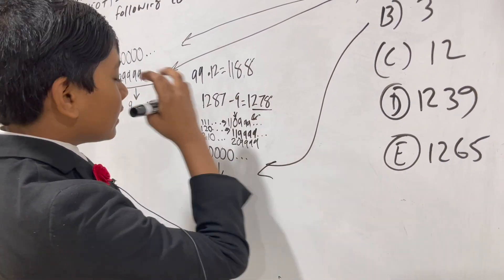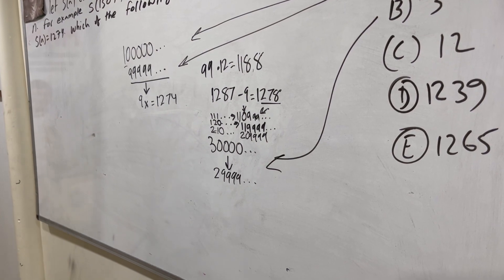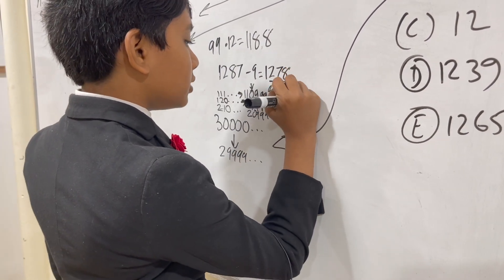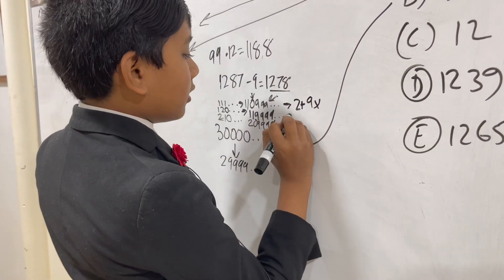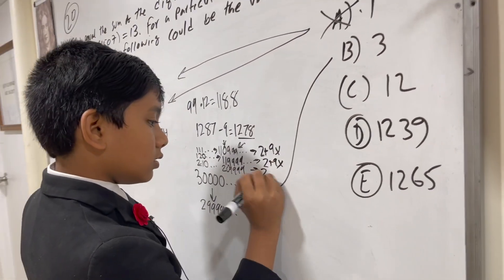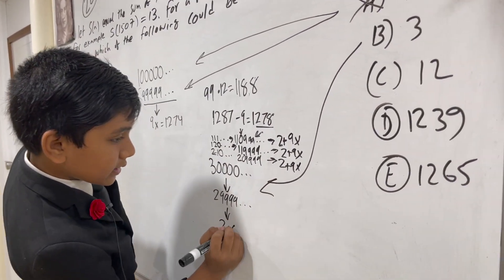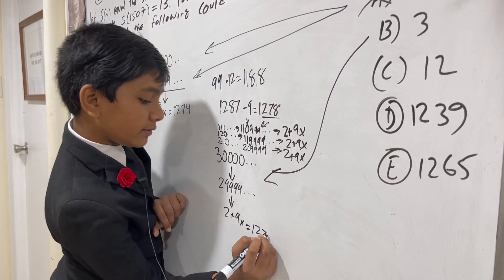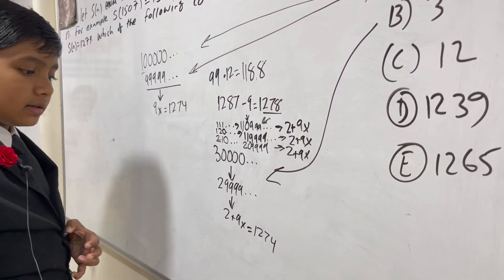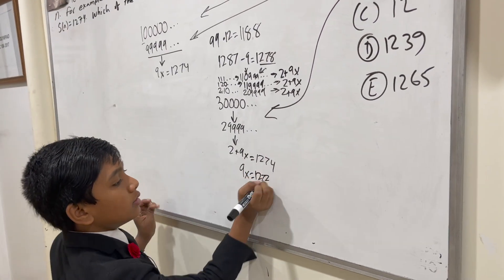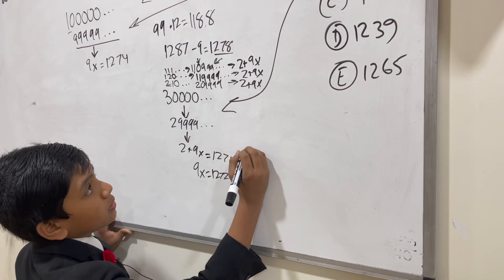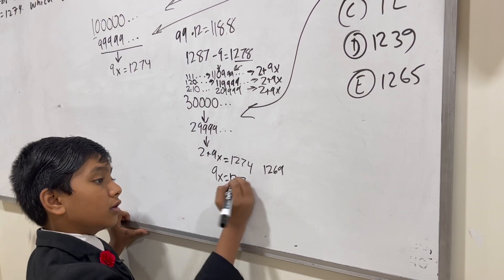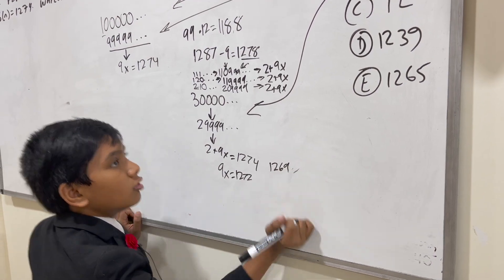In all cases, the digits of n still sum to 2 plus some unknown number of nines — that is, 2 + 9x. So 2 + 9x = 1274, meaning 9x = 1272. But 1272 is not divisible by 9; the closest multiple of 9 is 1269, which is 3 away. So B is not an answer either.